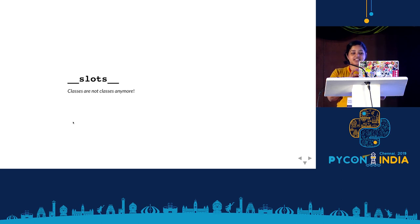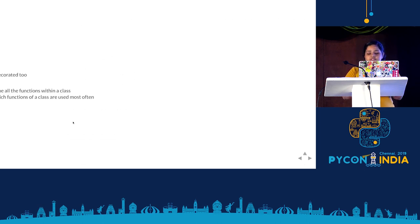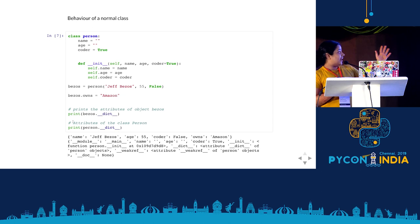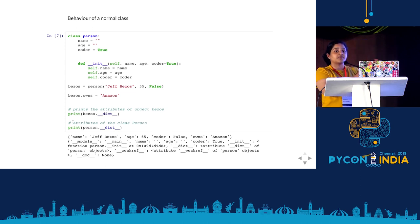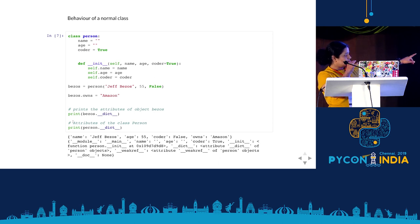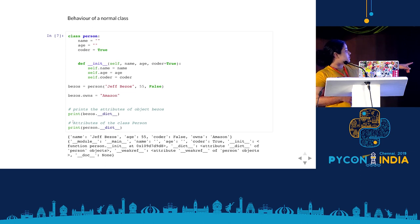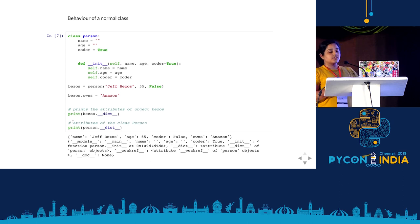Now I'm going to talk about slots — this is where classes don't behave like classes anymore. With a normal class in Python, say a class Person with name, age, and a default 'coder' attribute, you can add an attribute to an object at runtime and it works. I'm showing all the attributes of the __dict__ of each object — so Bezos is an object with name, age, and the extra attribute we just added. The class Person also has an attribute dictionary showing name, age, and coder with its default value.